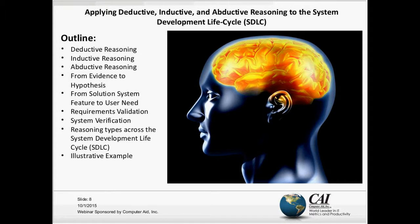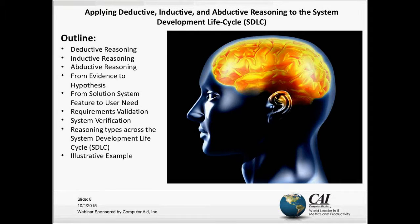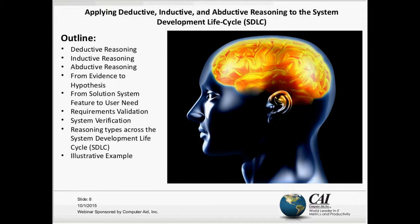We're going to look at going from evidence to hypothesis, and from a solution or system feature to a user need. We're going to talk about requirements validation and system verification, and look at how these different types of reasoning occur throughout the system development lifecycle. We'll also use an example to illustrate that.